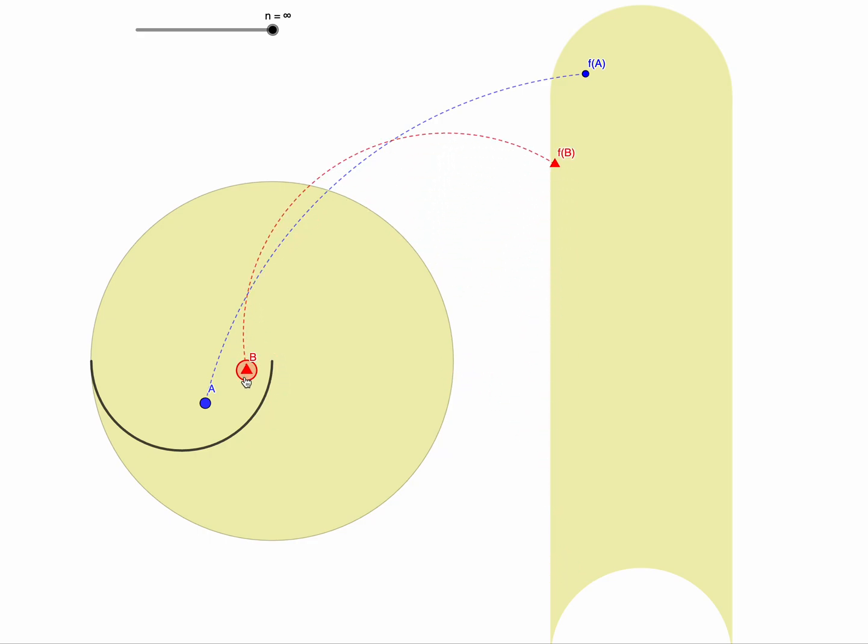It's of measure zero or area zero, and so almost everywhere this function is one-to-one. It's continuous, and it maps the area of the disk to the area of the strip in an area-preserving fashion.